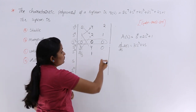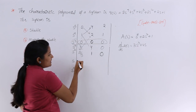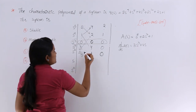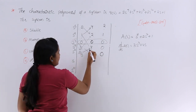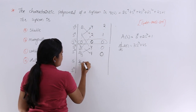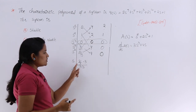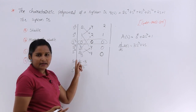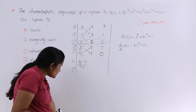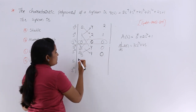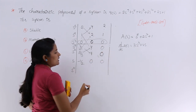The next element is 0 since there is no cross set. For the s^1 row: (2/3)×4 − 3×1, all divided by (2/3). That gives 8/3 − 3 divided by 2/3 = (8/3 − 9/3) / (2/3) = (−1/3) / (2/3) = −1/2. The remaining elements in that row are 0.